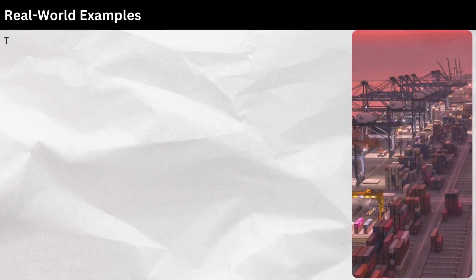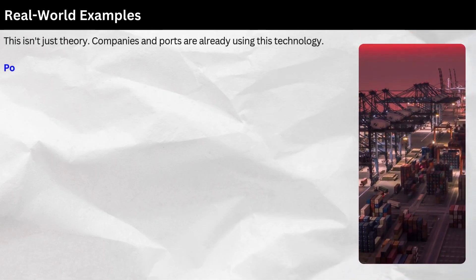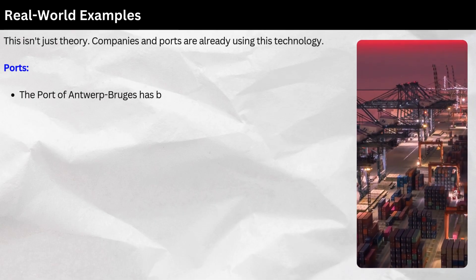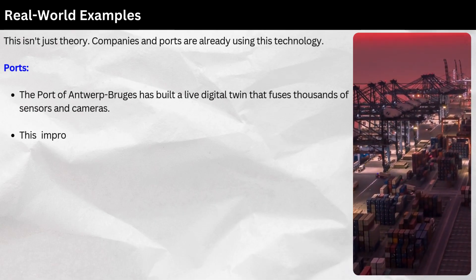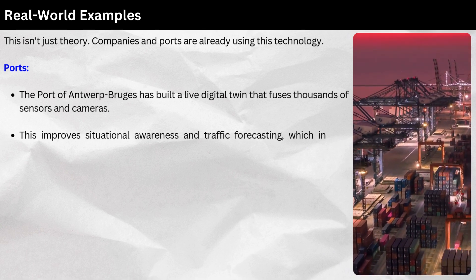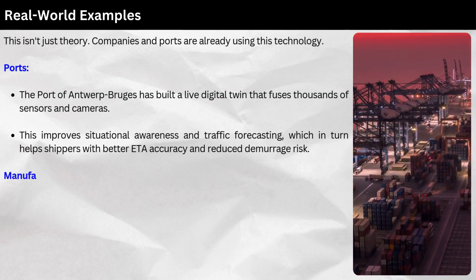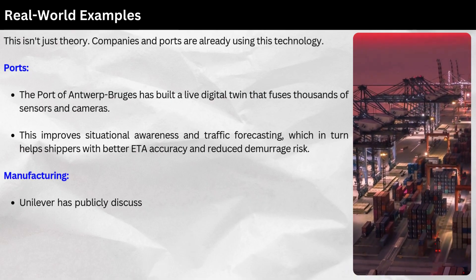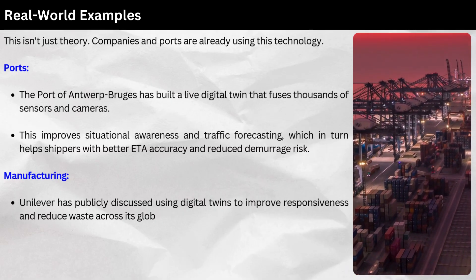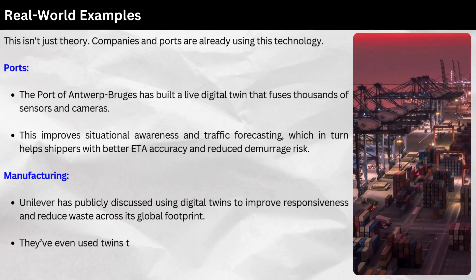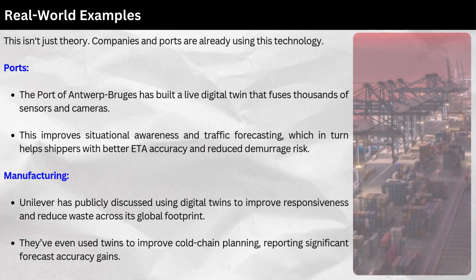Real-world examples — this isn't just theory. Companies and ports are already using this technology. The Port of Antwerp-Bruges has built a live digital twin that fuses thousands of sensors and cameras, improving situational awareness and traffic forecasting, which helps shippers with better ETA accuracy and reduced demurrage risk. In manufacturing, Unilever has publicly discussed using digital twins to improve responsiveness and reduce waste across its global footprint. They've even used twins to improve cold chain planning, reporting significant forecast accuracy gains.